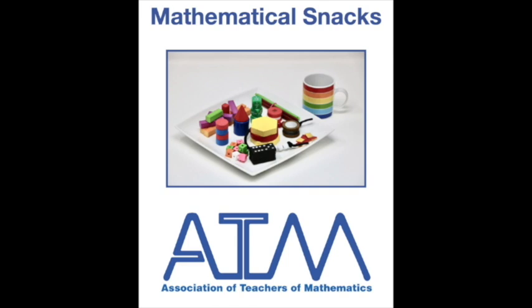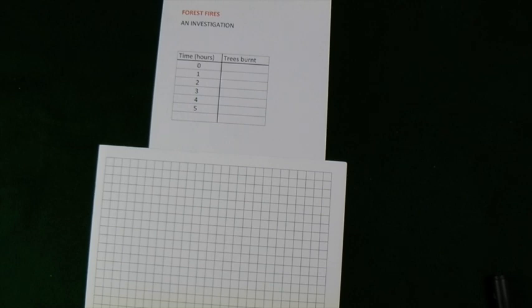This is a mathematical snack from the Association of Teachers of Mathematics. This is called forest fires. We're going to model how a forest fire might spread. In each of these squares, I want you to imagine a tree.